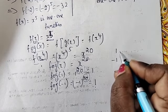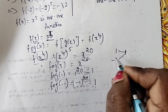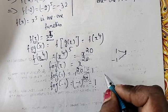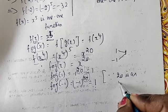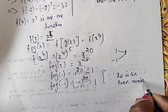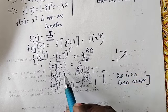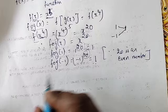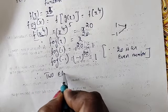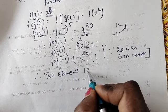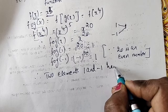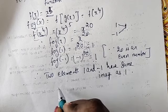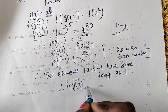1 and -1 have the same image 1. So it is a many-to-one function, not a 1-to-1 function. Since 20 is an even number, both 1 and -1 give the same image 1. Therefore fog(x) is not a 1-to-1 function. Two elements, 1 and -1, have the same image 1. Therefore fog(x) is not 1-to-1.